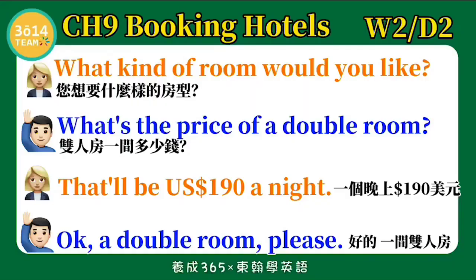What kind of room would you like? 你想要什么样的房型呢? What's the price of a double room? 双人房一间多少钱? That will be 190 US dollars a night. 一个晚上一百九十美元。OK, a double room please. 好的一间双人房。